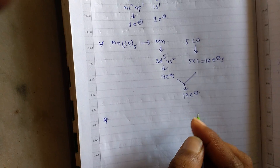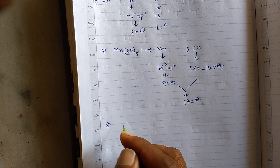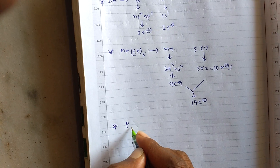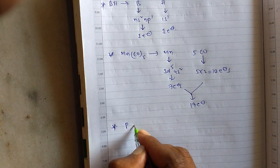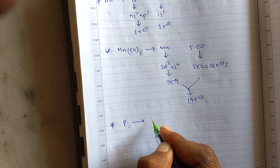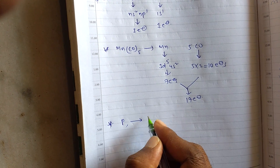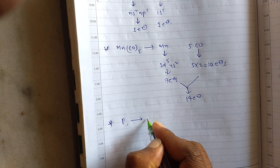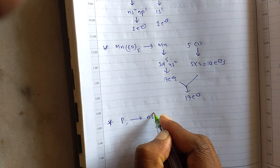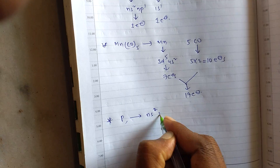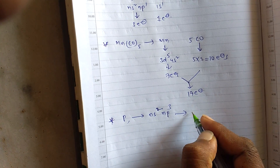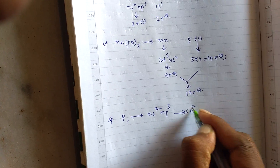Go for the second option. Phosphorus has outer electron configuration NS²NP³, that means it has 5 electrons.